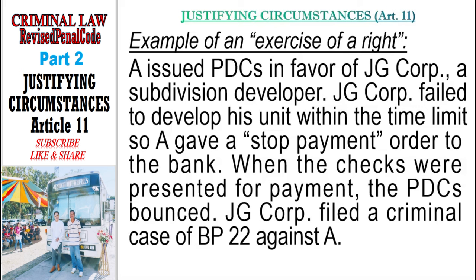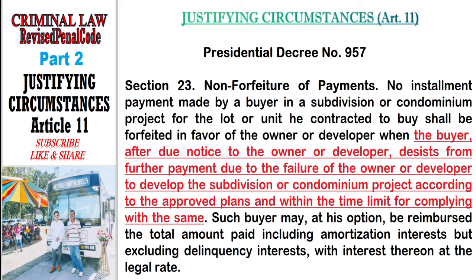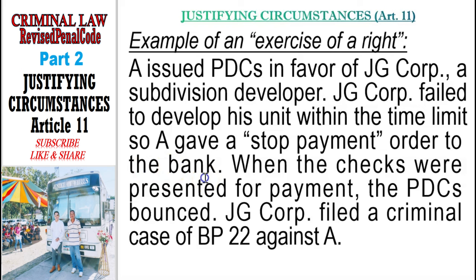Example: A issued post-dated checks in favor of JG Corporation, a subdivision developer. JG Corporation failed to develop his unit within the time limit, so A gave a stop payment order to the bank. When the checks were presented, the PDCs bounced. JG Corporation filed a criminal case of BP-22 against A. Is there a defense available for A? Yes — under Presidential Decree No. 957, Section 23, it gives A the right to suspend installment payments if the owner or subdivision developer fails to develop the unit within the time limit. Since the developer failed, A validly exercised his statutory right under PD-957, which is a justifying circumstance.